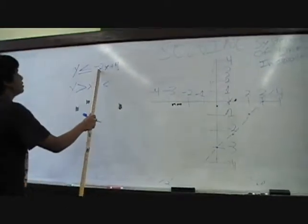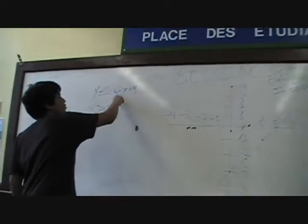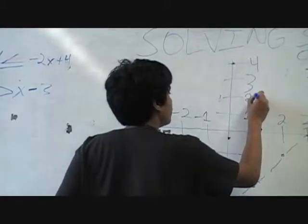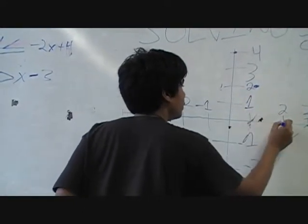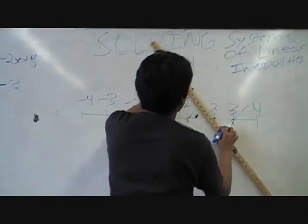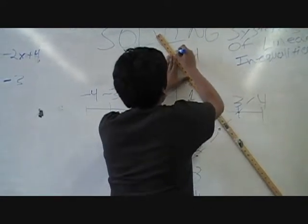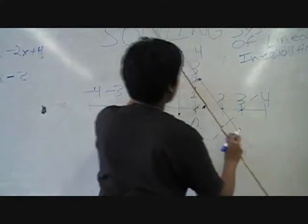Next to graph this, negative 2x plus 4. So start off at positive 4, and this slope is basically negative 2 over positive 1. So why is it the solid line? Because it's not regular less than or greater than. So then you go ahead and draw the solid line, and there you go.